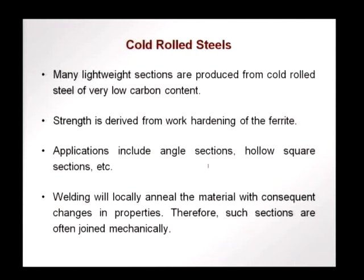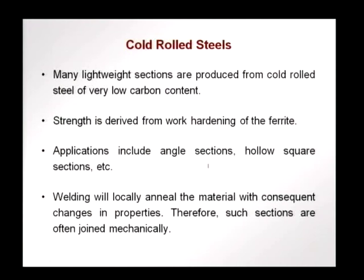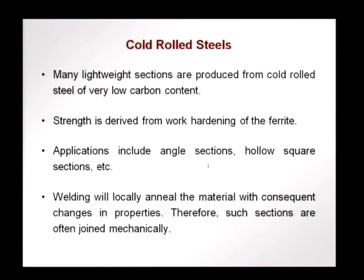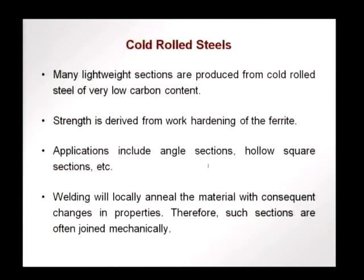However, we cannot use welding to join these elements. Welding will locally anneal the material with consequent changes in properties. Annealing — the application of temperature — will reverse the strain hardening and go back to having a lower strength, which we do not want. At the joint, annealing will occur and the strength will go down, making it weaker than the remaining part of the framework. Therefore, such cold rolled sections are joined mechanically through riveting, bolting, crimping, or screws.